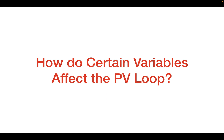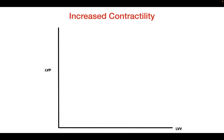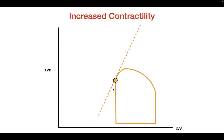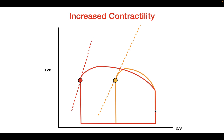Now let's look at how different variables affect the pressure volume loop. First, we'll consider increasing contractility. Starting with the control pressure volume loop representing a normal human heart, the ESPVR line reflects its contractility. If we increase the contractility, the new curve has a steeper ESPVR slope, confirming that contractility has increased.